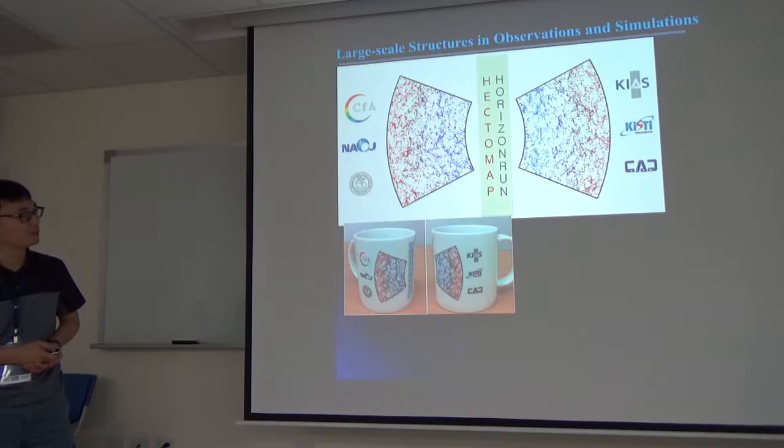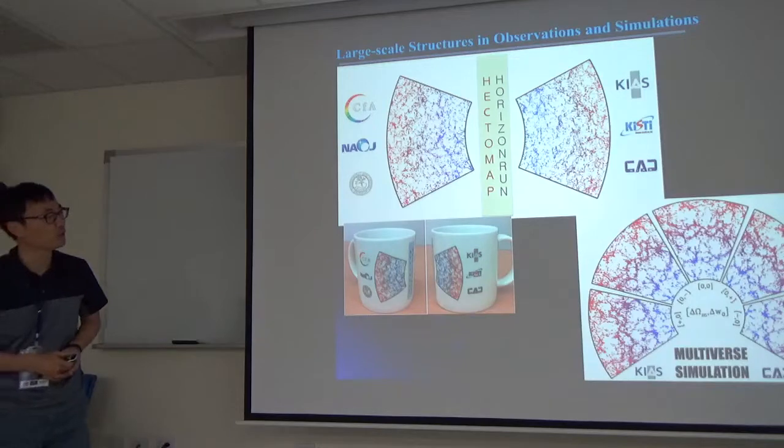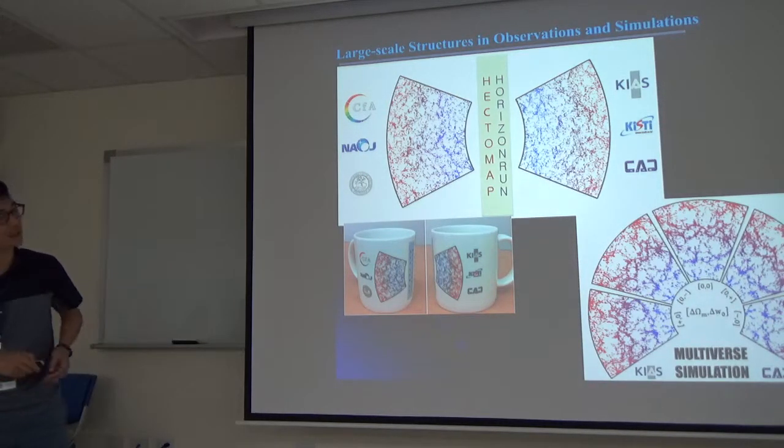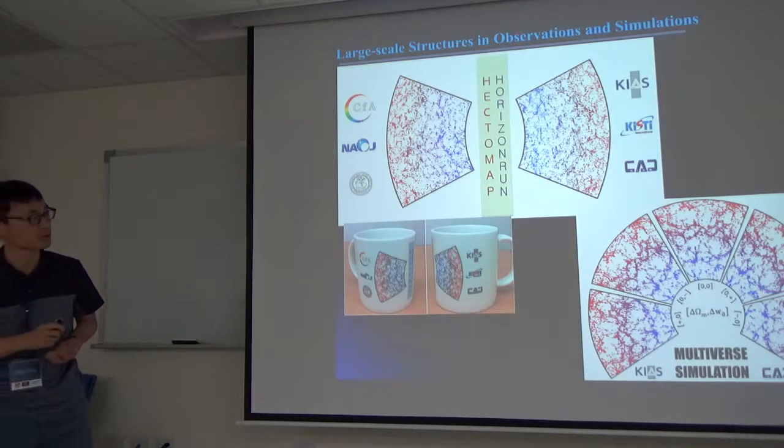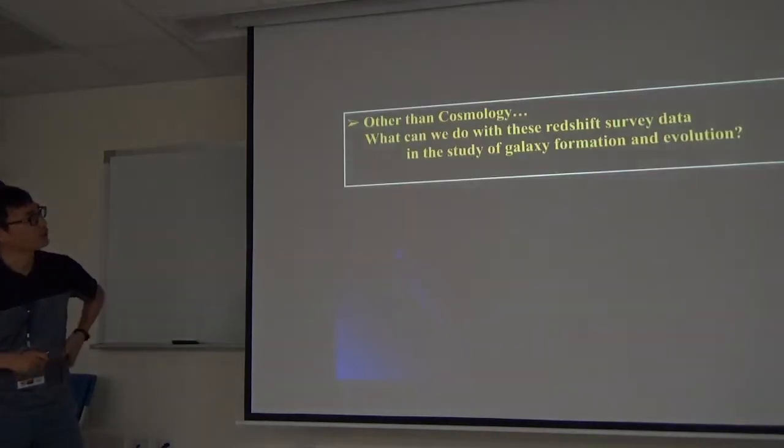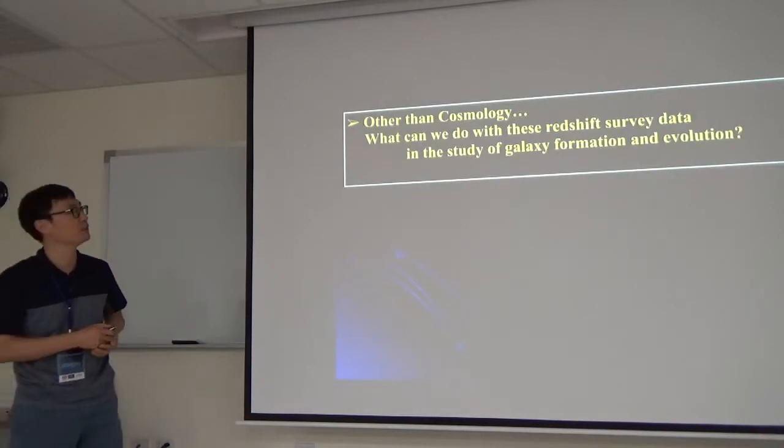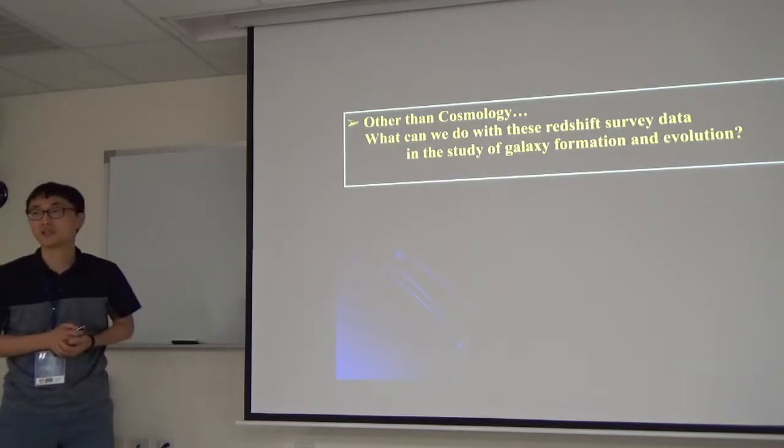If you come to KIAS, not KASI, you can get some mugs there. I also made a logo for another simulation called Multiverse. Multiverse consists of five different universes with different cosmological parameters to study the dark energy. The question is, using this redshift survey data and simulation data, they can study cosmology. But what can we do with this data in the study of galaxy formation and evolution?